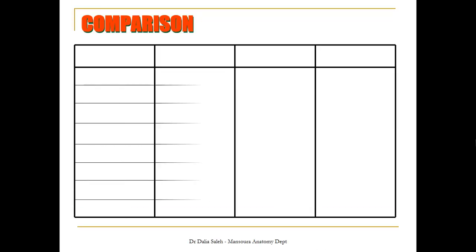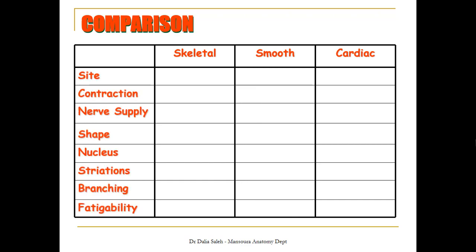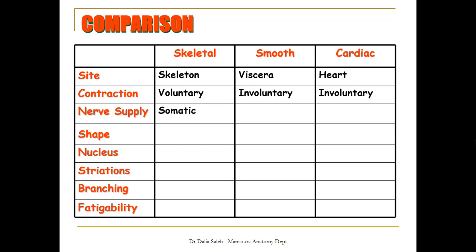If we compare these three types regarding their site, contraction, nerve supply, shape, number of nuclei, presence or absence of striation, branching, and fatigability: skeletal muscles are attached to our skeleton, smooth muscles are in the wall of the viscera, and cardiac muscle is in the wall of the heart. The skeletal muscle is under voluntary control, while smooth and cardiac are involuntary. That's why skeletal muscle is supplied by the somatic nervous system, while smooth and cardiac are supplied by the autonomic nervous system.